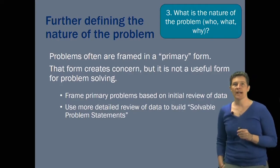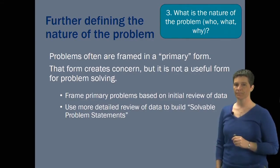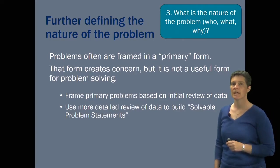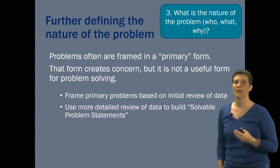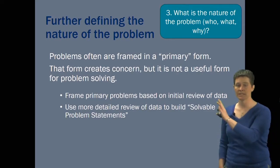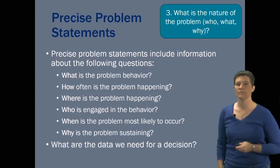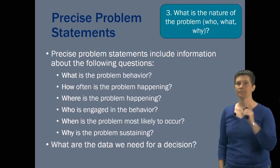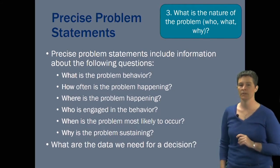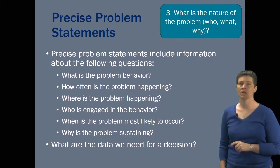We're going to think further about defining the nature of the problem and how to tailor our language to lead us towards an intervention. One of the things we're pretty good at in schools is defining problems in a primary way — one that points out a concern but isn't particularly useful for solving it. It's a broad statement that just says the kids are out of control but doesn't point you towards how to solve the problem. Precision problem statements, on the other hand, really guide you towards a solution. A precision problem statement tells you what the behavior is, how often it's happening, where, who's engaged, when it's most likely to occur, why it's happening, and what data we need to guide our decision.